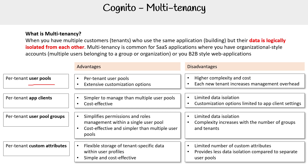Really, the only one that is true multi-tenancy is per-tenant user pools. If you want to see diagrams of these, they're all in the AWS docs. When thinking as a solution architect, you need to understand the multi-tenancy component. If you're going to do multi-tenancy with Cognito, use separate user pools.